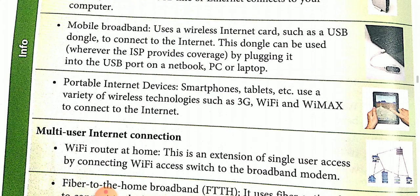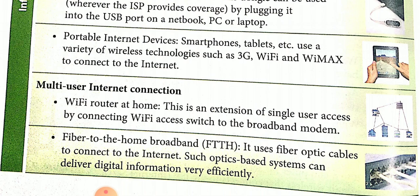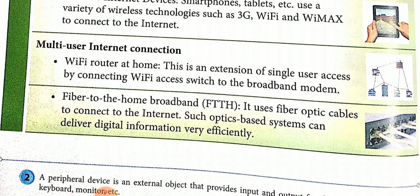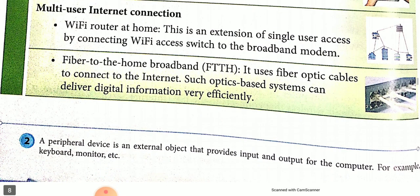Now move to the next topic — multi-user interconnection. That means the Wi-Fi. For example, at your home, you have one router and all your family members are connected with that one router — this is the meaning of multi-user interconnection. This is an extension of single user access by connecting a Wi-Fi access switch to a broadband modem. Fiber to the Home broadband — FTTH — uses fiber optical cables to connect to the internet. Such an optics-based system can deliver digital information very efficiently.